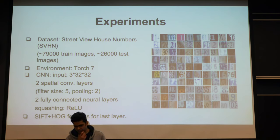For our experiments, we used the Street View House Number dataset. We used Torch7 as our environment, and our convolutional neural nets had two spatial convolutional layers followed by two fully connected neural layers. And for training the weights Vi, we essentially extracted SIFT and HOG features from all the test images.